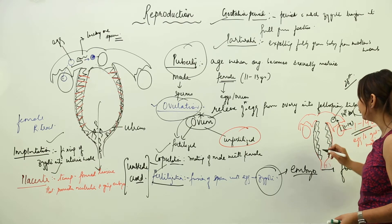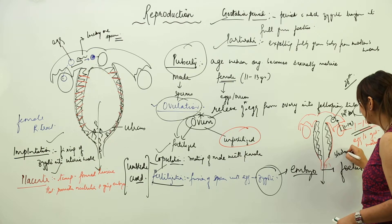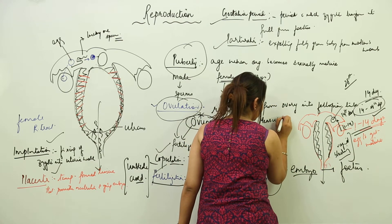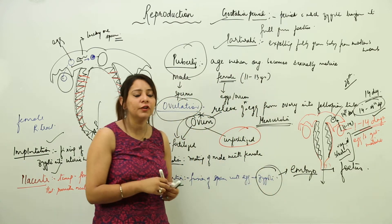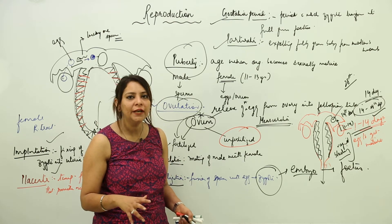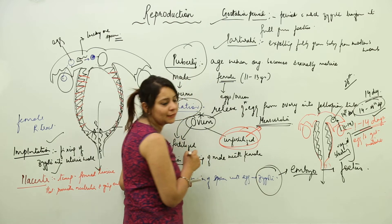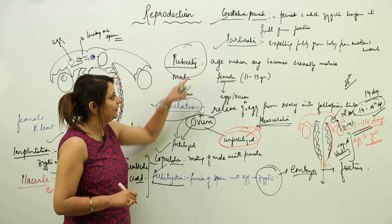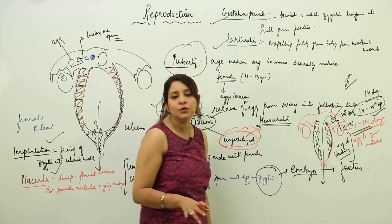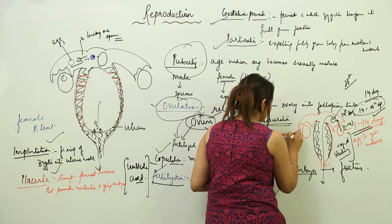If the egg does not receive a sperm, then on the 28th day the egg along with all the blood vessels and everything developed in the uterine wall bursts out and is bled out through the vagina in the form of blood. This is called vaginal bleeding, and this process is called menstruation — the shedding of the uterine wall along with the ovum and blood vessels through the vagina.